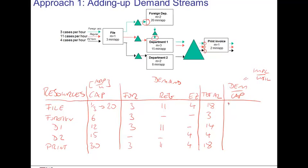In this case, eighteen divided by twenty is the implied utilization for filing; three divided by six at the foreign department; fourteen divided by twelve at department one; four divided by fifteen at department two; and eighteen divided by thirty at the printing department. The highest implied utilization is fourteen divided by twelve, which is roughly one hundred sixteen point six percent. This highest implied utilization makes department one the bottleneck.